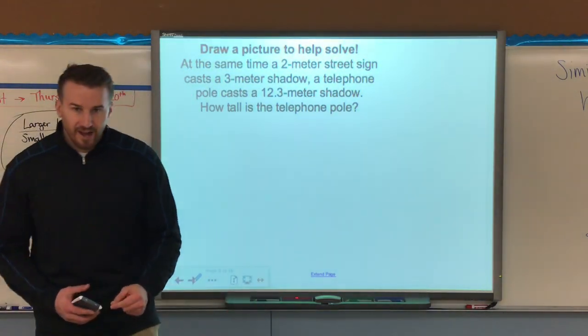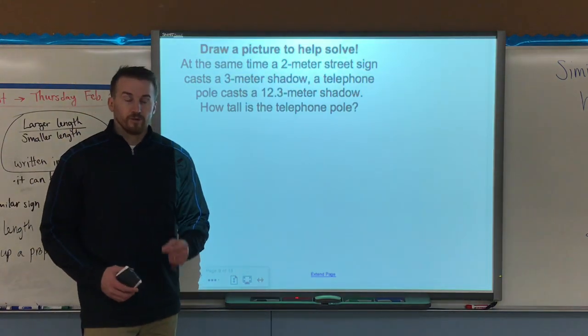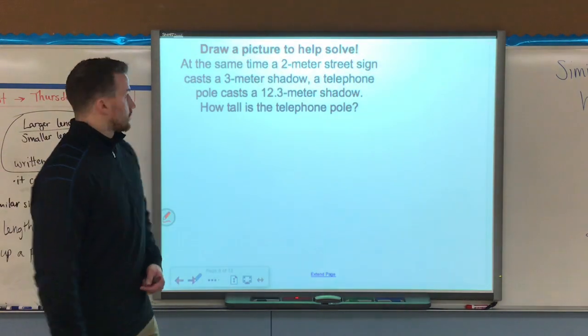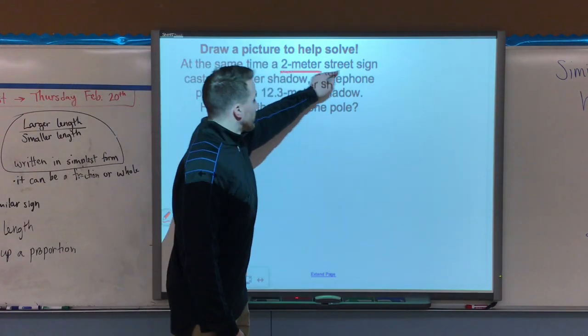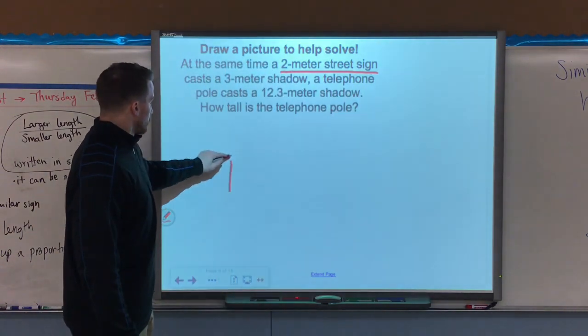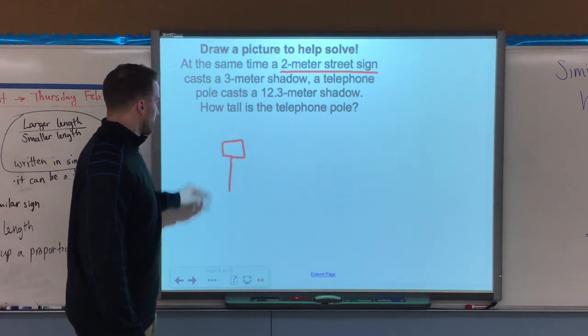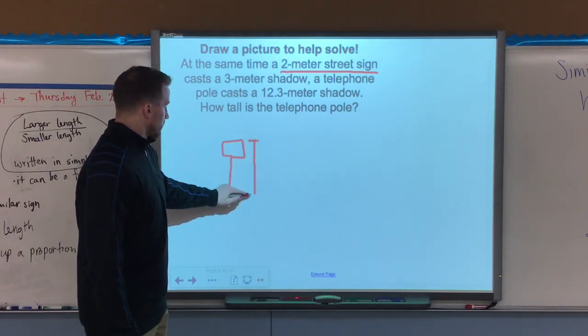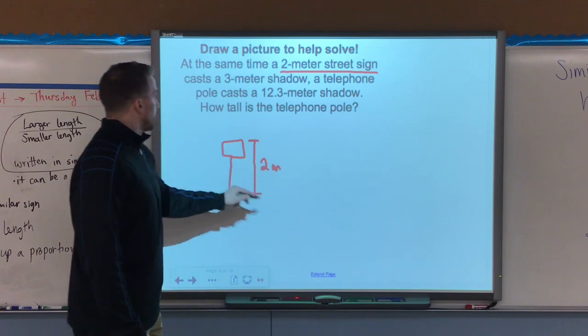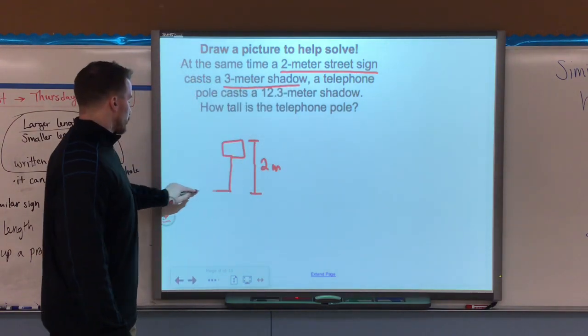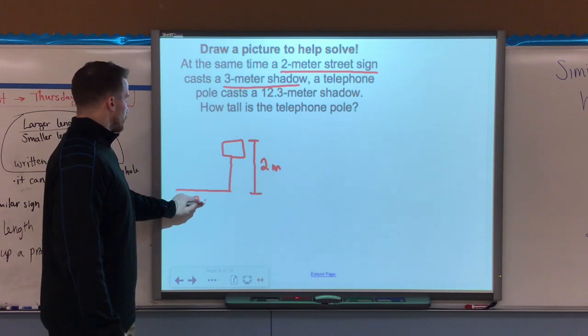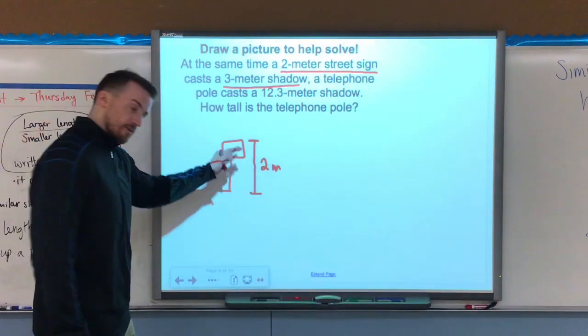Now, if we do not have a picture, we can draw a picture to help us solve the problem. So at the same time, a 2 meter street sign, so here's my street sign. I know that its height here is 2 meters. It casts a 3 meter shadow. So its shadow is 3 meters in length. So again, there's my right triangle.